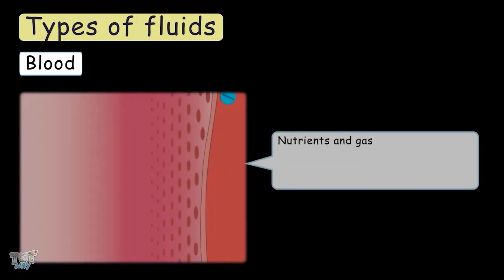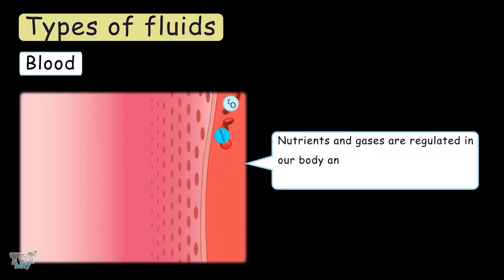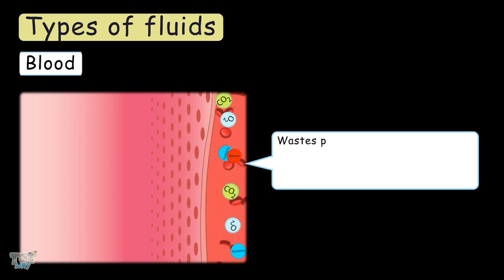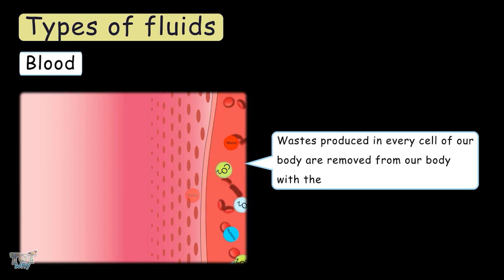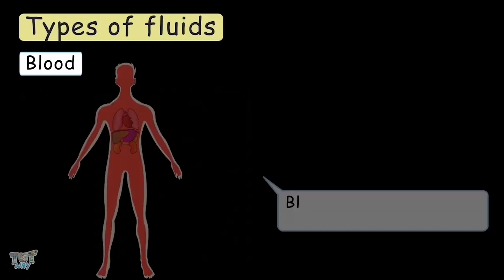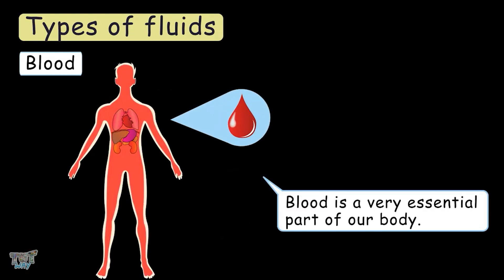Nutrients or gases are regulated in our body and transported to every part of our body through the blood. Wastes produced in every cell of our body are removed from our body with the help of blood. So, blood is a very essential part of our body.